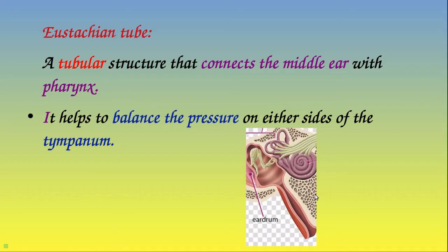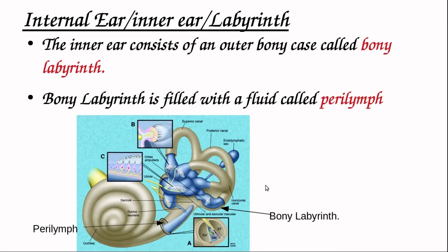So the importance of the Eustachian tube is to maintain the air pressure on both sides of the tympanum or eardrum. Now comes the internal ear or inner ear, which is also called the labyrinth.